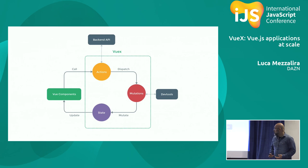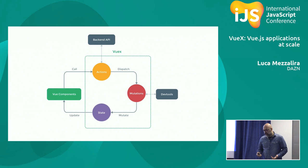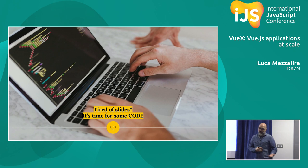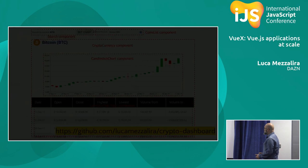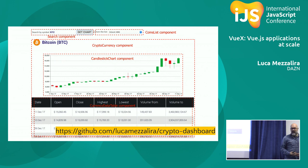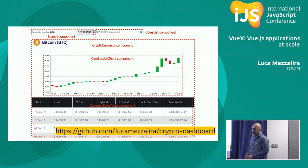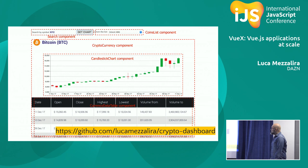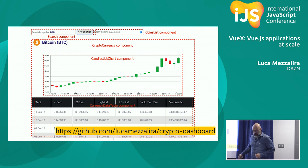This is how Vuex works — and if it looks simple, it's because it is. It's time to see some code, which I think is more interesting. In my spare time, I created a project to understand how Vue.js and Vuex feel to work with. The example uses cryptocurrency data. You can find the repository in my GitHub account. Let's go into the code.